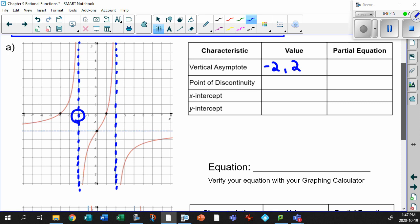So what are the equations that go with this? Think about it. The partial equation that goes with this is x plus 2 for this one and x minus 2 for this one. And where do those vertical asymptotes equations go? They go in the denominator.